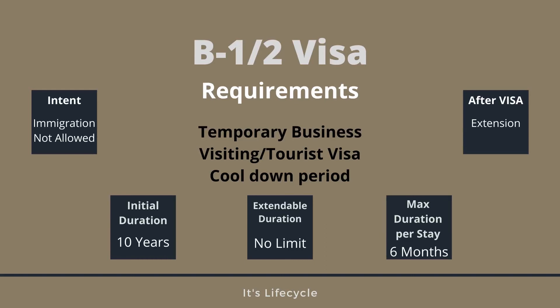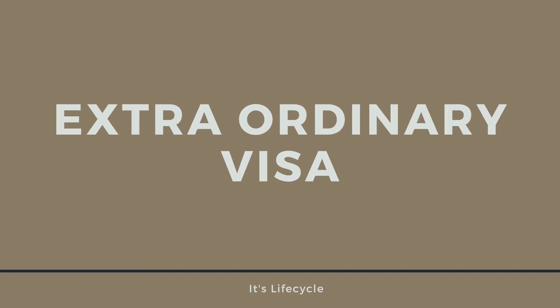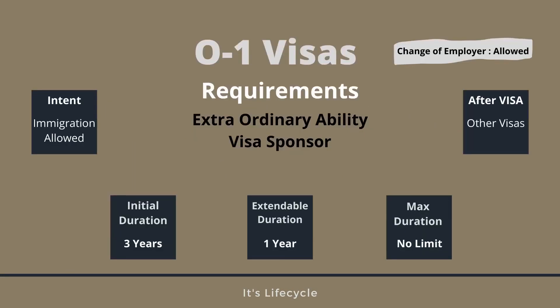Next, we have the extraordinary ability visa — O-1 visa. This is recently a very famous visa in India. This is only for extraordinary people. In this visa, we have to prove our abilities. For example, we need either Oscar nominations, Nobel Prize nominations, or international and national level recognition. This visa allows long-term stay in the US and we can do green card processing. We have to have sponsorship from a company — this is not an individual visa. If you are eligible, you can apply for this visa, and there is no maximum limit.